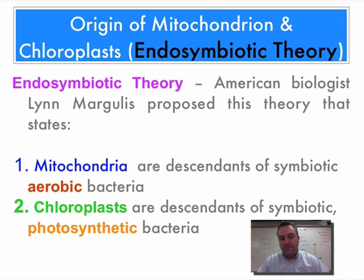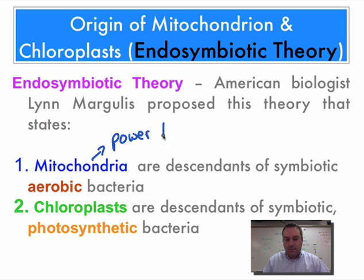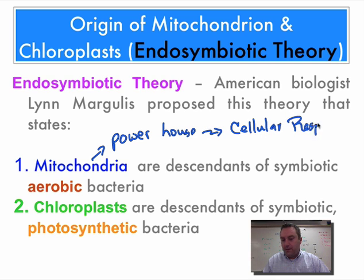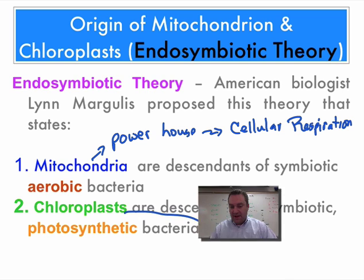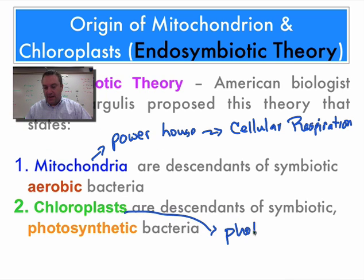The mitochondria is important because it's the powerhouse of the cell. It does a process called cellular respiration, where you get the most bang for your buck when it comes to ATP. Chloroplasts are found in plants and are the site of photosynthesis.